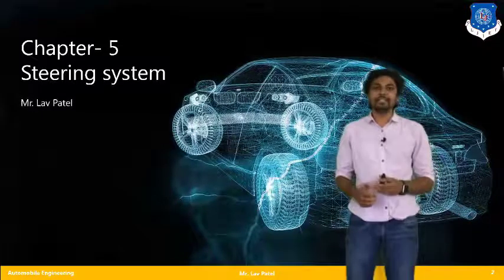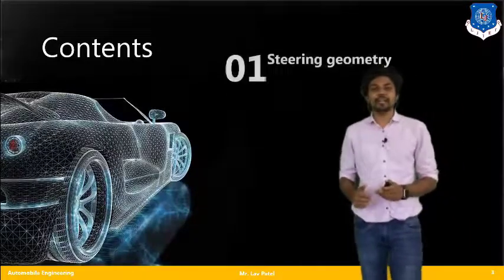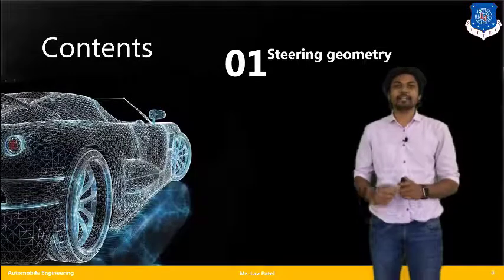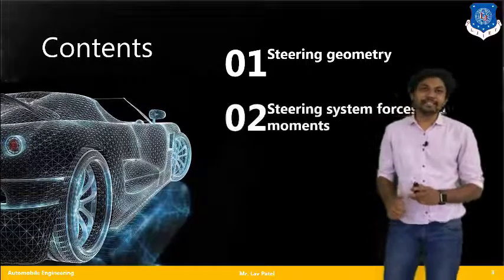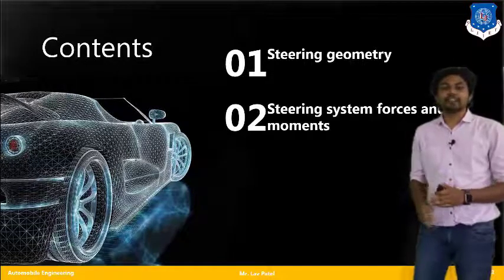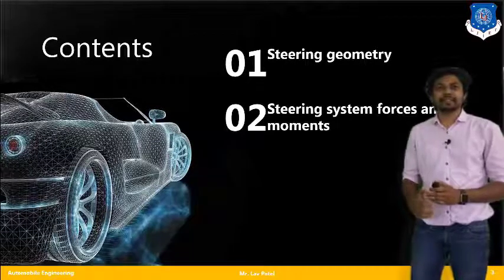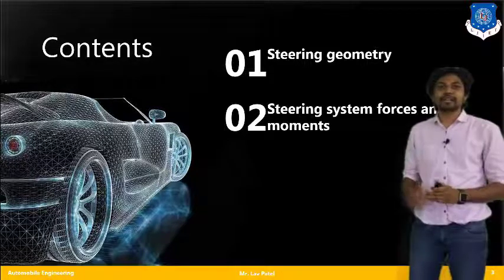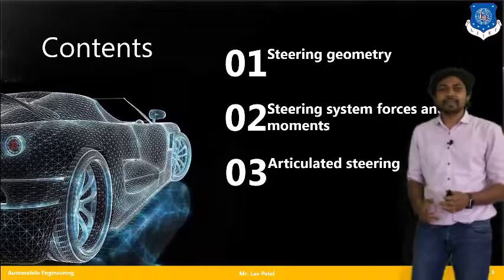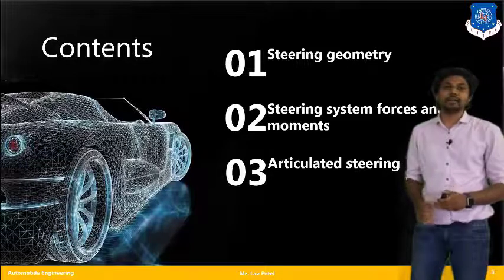In today's lecture we will see the main steering geometry — there are several types of geometries and parameters that we have to consider to design our steering system. The second topic is steering system forces and moments, where we consider axes like the x-axis, y-axis, and z-axis. The third topic is articulated steering, a special type of steering used in articulated vehicles for better performance.